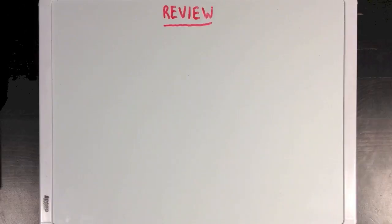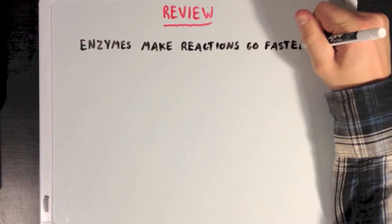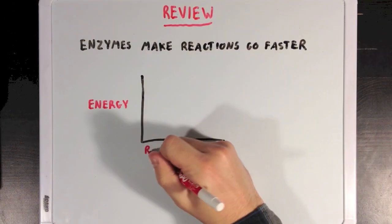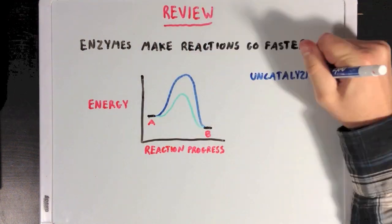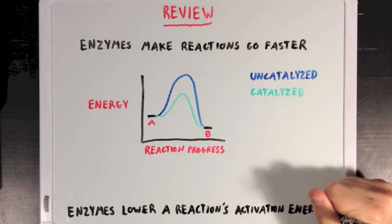First, let's review the idea that enzymes make reactions go faster. Looking at a reaction coordinate diagram, you'd notice that enzymes speed things up by lowering a reaction's activation energy.